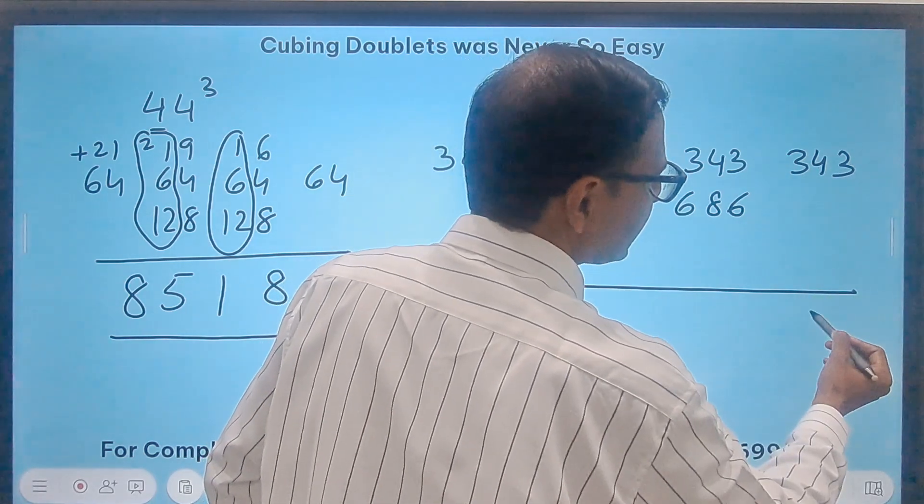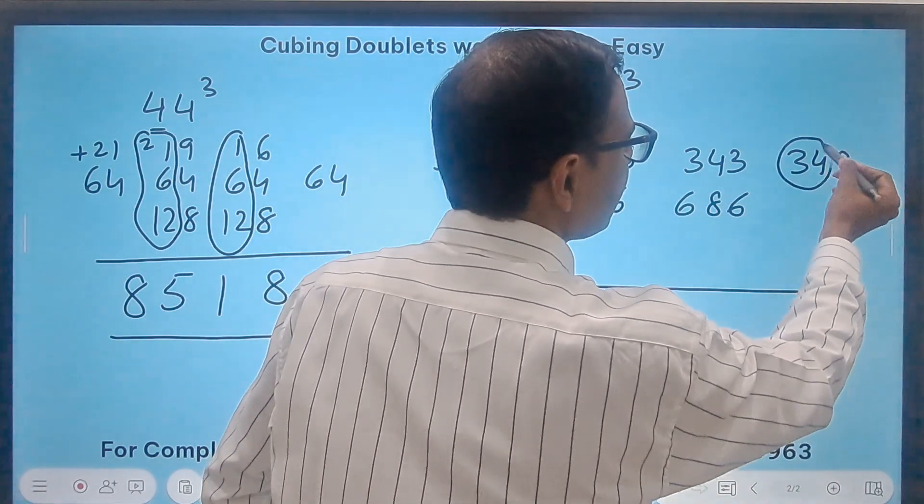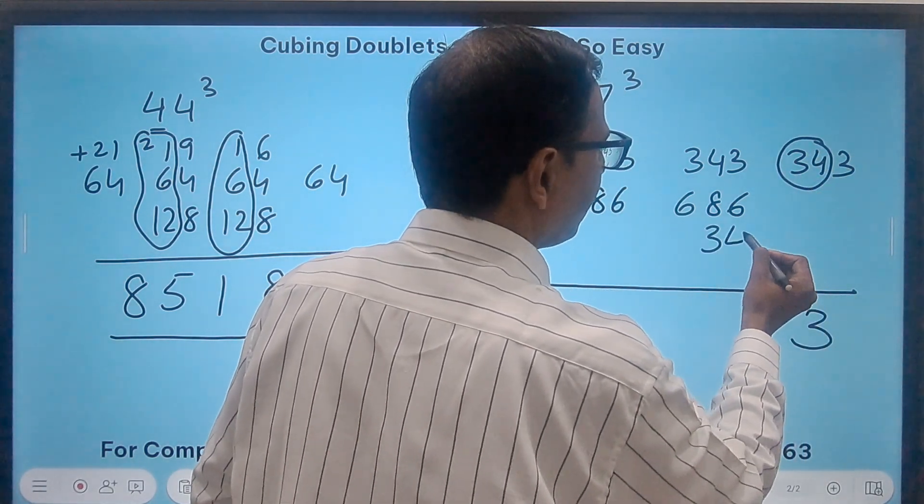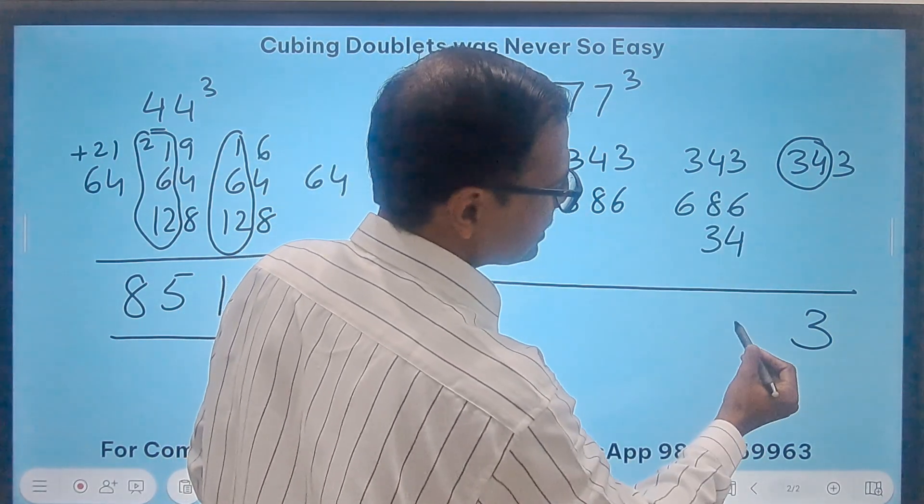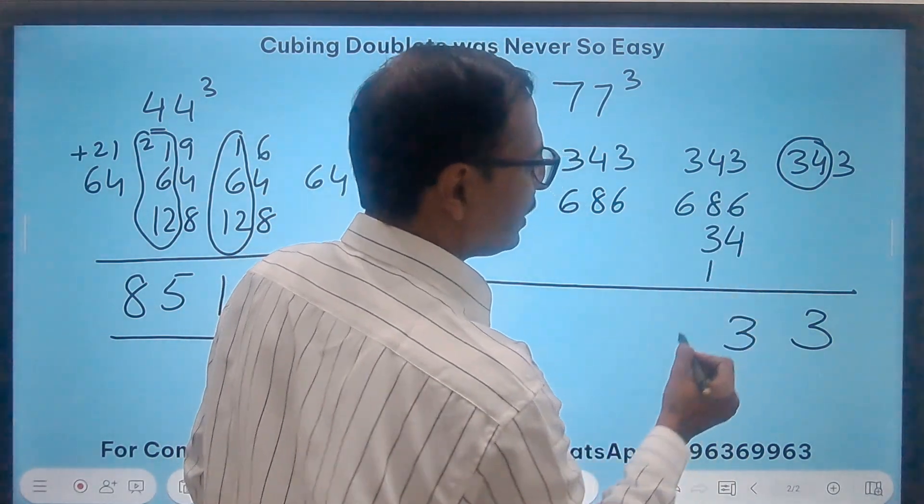So that I can write the carry forward number. So 343 means 3 comes down. And this 34 gets carried forward here. Now see, this is 13. So 13 means 3. And a 1 carry. I will write here.